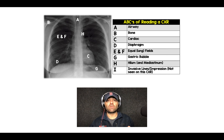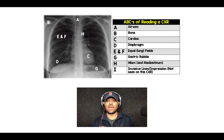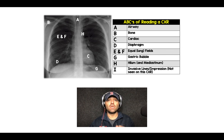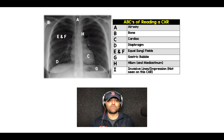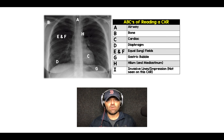A is for airway, B is for bones, C is for cardiac, D is for diaphragm, E and F is for equal fields, G for gastric bubble, H for hilum and mediastinum, and I for invasive lines. Let me know your thoughts and comments — I hope you found that helpful. Until next time.